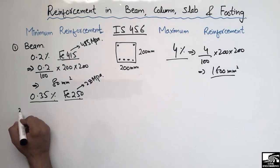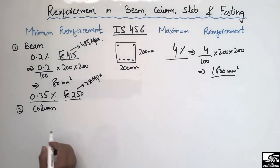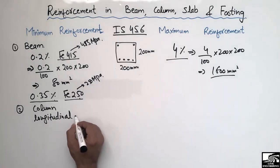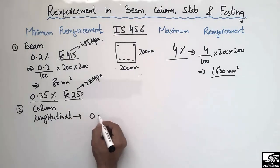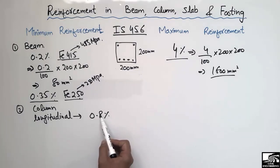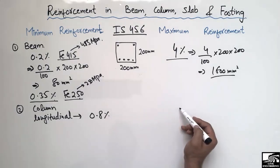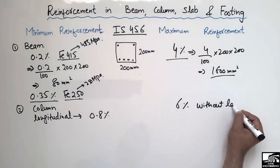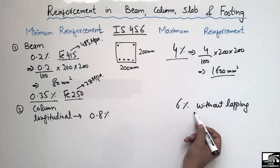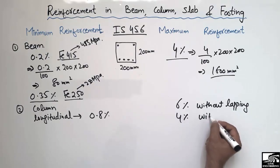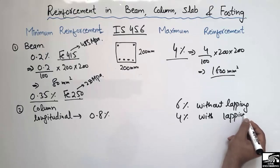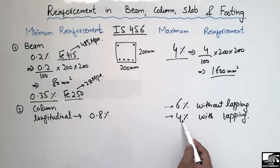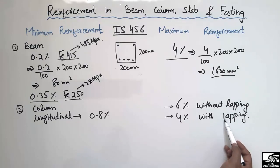Now, what should be the reinforcement requirement for the column? For the column's longitudinal bars — not stirrups or lateral ties — the minimum reinforcement requirement is 0.8 percent of the cross-section area of the column. The maximum reinforcement requirement is 6 percent without lapping of the steel bar. If we do overlap the steel bars in the column, then the maximum reinforcement is 4 percent. So the minimum is 0.8 percent and the maximum is 6 or 4 percent depending on whether lapping is used.